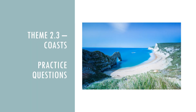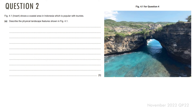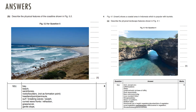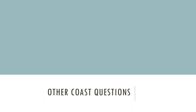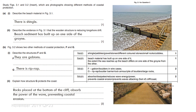Using that approach, here are some practice questions for you. Pause the video and have a go at answering the first one, then continue the video to see the answers. The second question asks you to describe the physical landscape features shown in figure 4.1 — pause the video, have a go, then continue to see the answers. There are also additional coast questions that typically require you to identify various coastal defences, with answers provided.